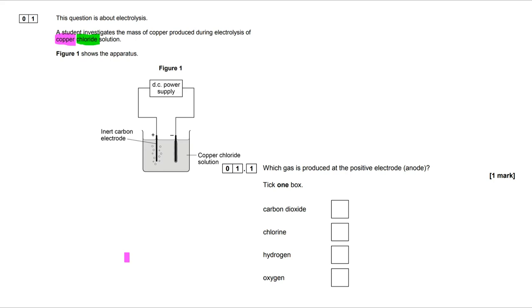Of those two, chloride ions are going to be negative. They're minus one, and we know that because chlorine is in group seven of the periodic table. It then makes sense that negative ions will be attracted to the positive electrode, because opposite charges attract. So the correct answer is chlorine.